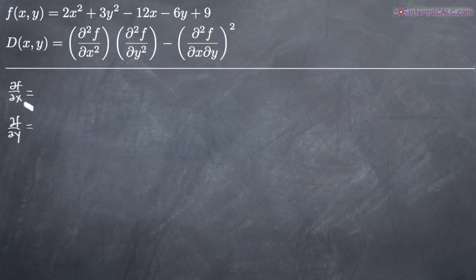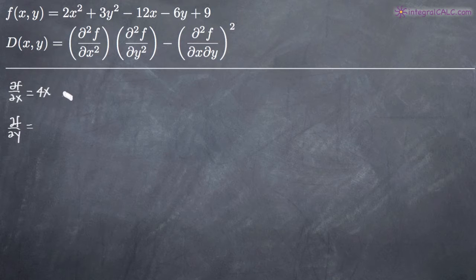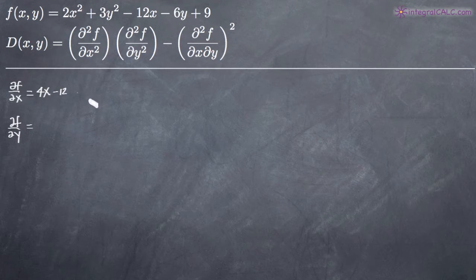When we take the partial derivative of f with respect to x, we treat x as the variable and hold y constant, as if it were a number like 3 or 4. The derivative of 2x squared with respect to x is 4x. The derivative of 3y squared is 0 because there's no x variable. The derivative of negative 12x is negative 12, and the derivatives of negative 6y and 9 are both 0. So the partial derivative of f with respect to x is 4x minus 12.